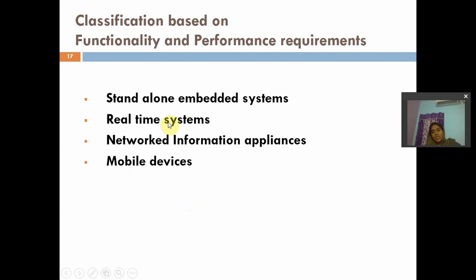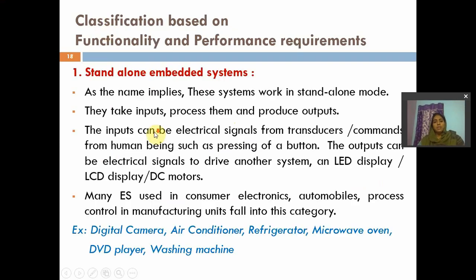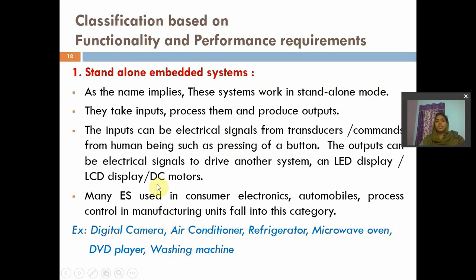Next classification is based on functionality and performance. The categories are: first, standalone embedded systems; second, real-time; third, network information appliances; and fourth, mobile devices. Coming to standalone — as the name implies, these systems work independently. They take inputs, process them, and produce outputs. They have input devices such as sensors and output devices like LEDs. Examples include home appliances like washing machines, refrigerators, and microwave ovens.